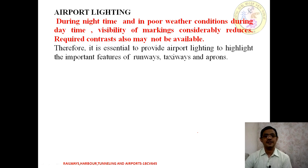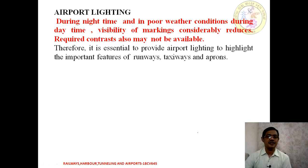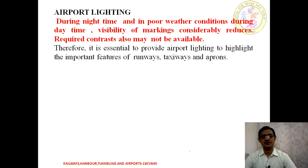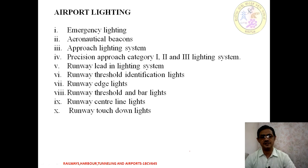Markings use different colors of paint as a visual aid. Similarly, for night or poor visibility conditions, lighting is provided. During night time or in poor weather conditions, different colors of lighting are used to minimize the chances of accidents. There are many types of lights used in an airport.